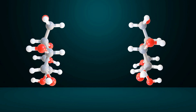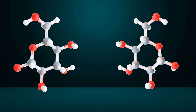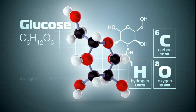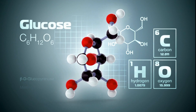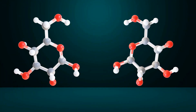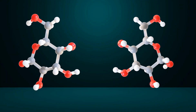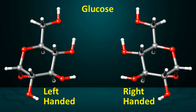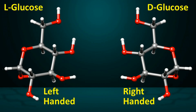Such left and right distinctions also exist in the molecules of certain compounds. For example, the compound glucose, which is the primary source of energy for our body, is a chiral molecule. This means glucose exists in two types, left-handed and right-handed. Glucose molecules can be classified into two types: left-handed glucose called L-glucose and right-handed glucose called D-glucose.